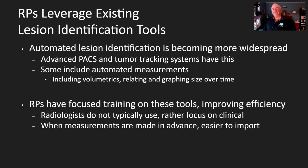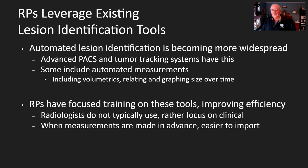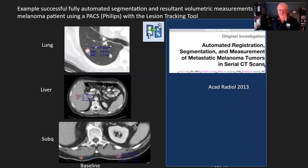RPs will leverage existing lesion identification tools. I'll show an example of a fully automated lesion identification and measuring tool in our advanced PACS, and this is becoming more available. Some are fully automated and 100% using AI. Some include volumetrics, which a lot of centers may not be doing yet but has that possibility. Since the RPs focus on training on these tools, that improves radiologist efficiency, and when the measurements are already made, it's easier for us to import them into reports as hyperlinks.